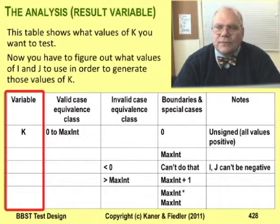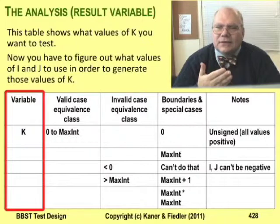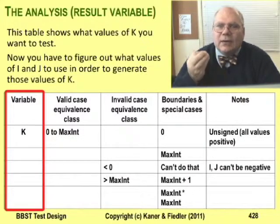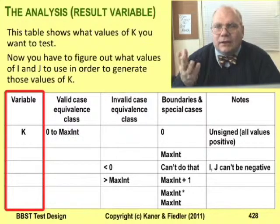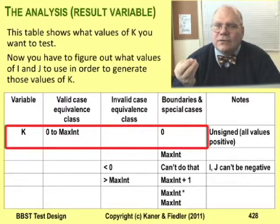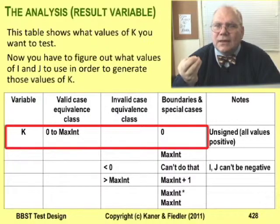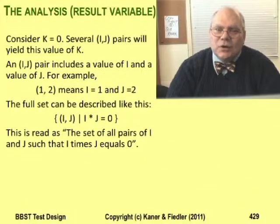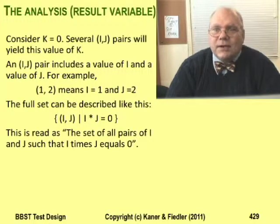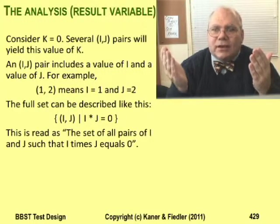The challenge with result variables is that you can't just enter a value into k and test it. The only way you can get values into k is indirectly, by entering values into i and j and letting them multiply to give you k. Let's look at how this works. The first test in this table is k equals zero.